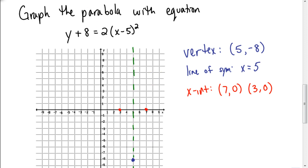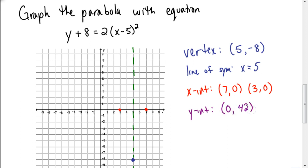The next step would be to find the y-intercept — that's where we replace x with 0. The problem here is that when you find the y-intercept for this particular example, we end up getting the coordinate where x is 0 and y is 42, and that's not going to fit on our graph. So there's got to be something else we can do, because remember we want to find a total of five points — I have three, so I need two more.